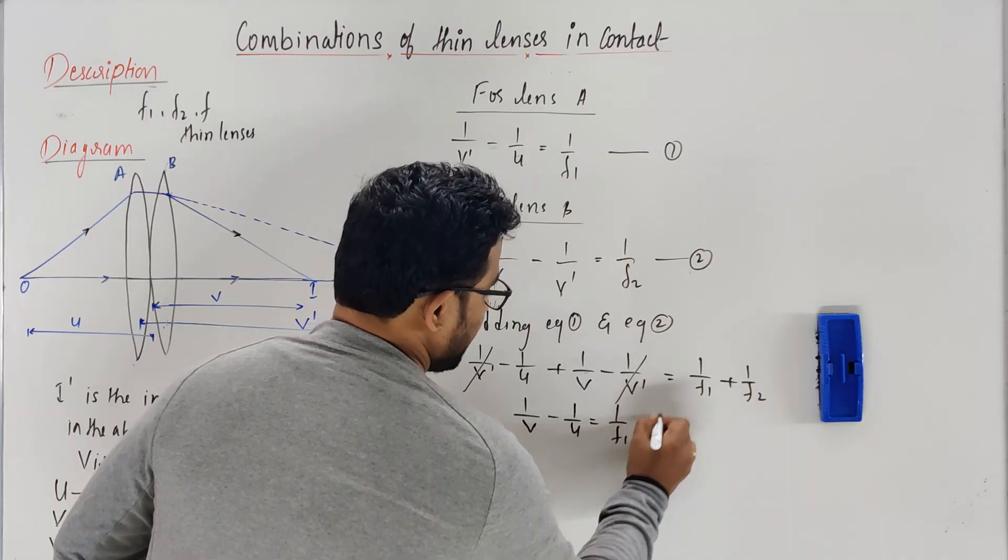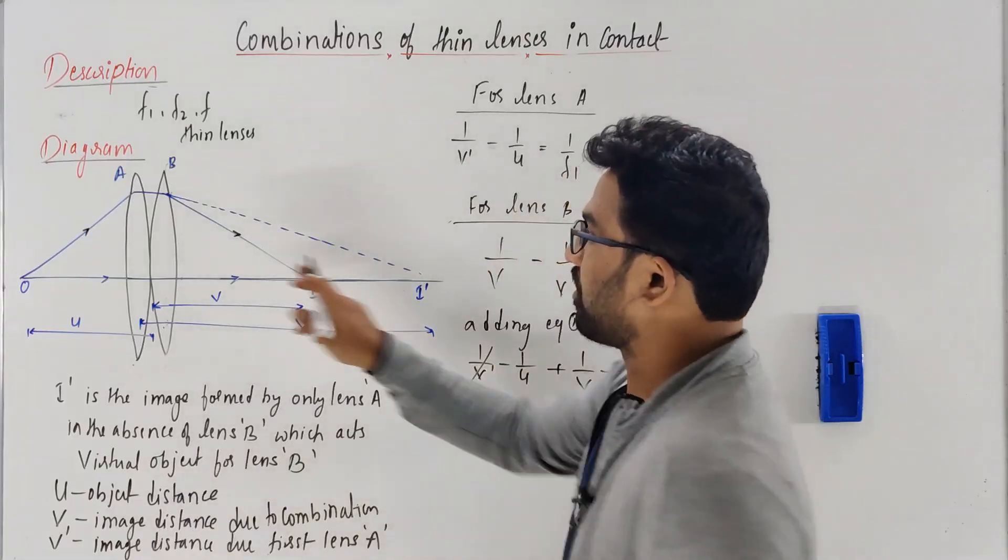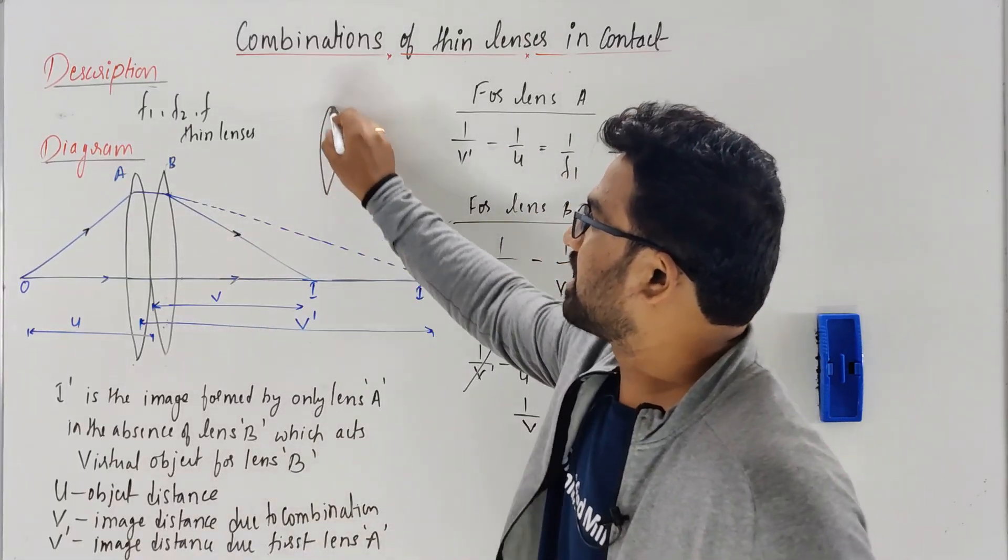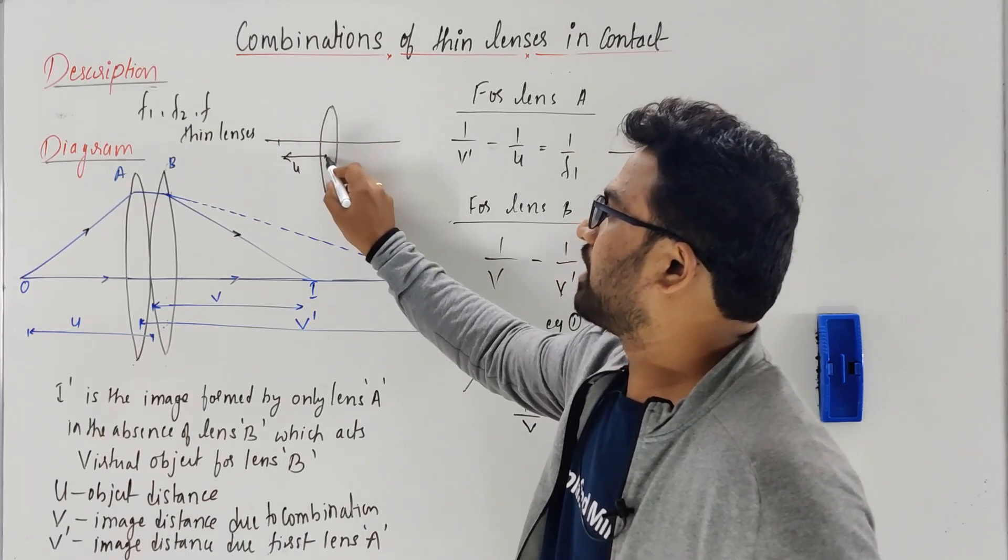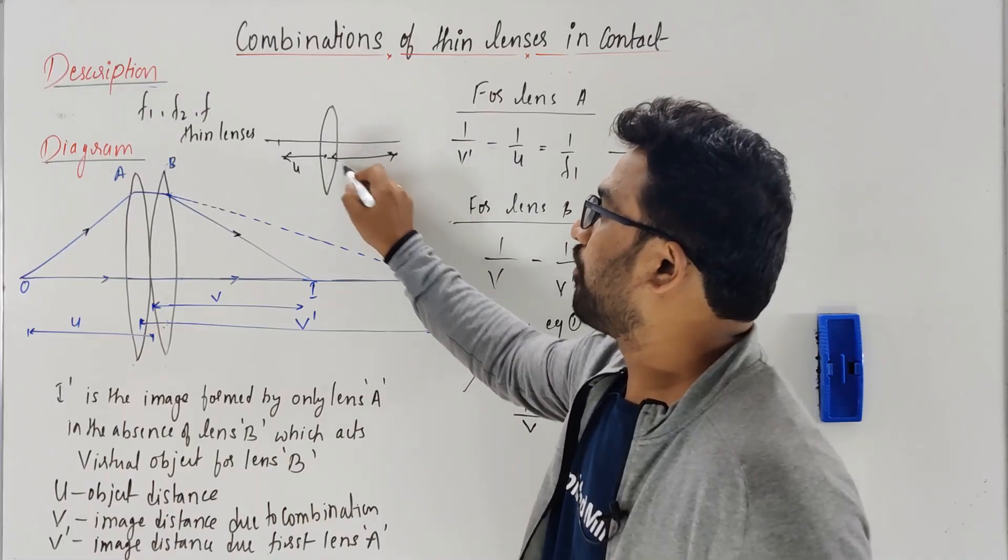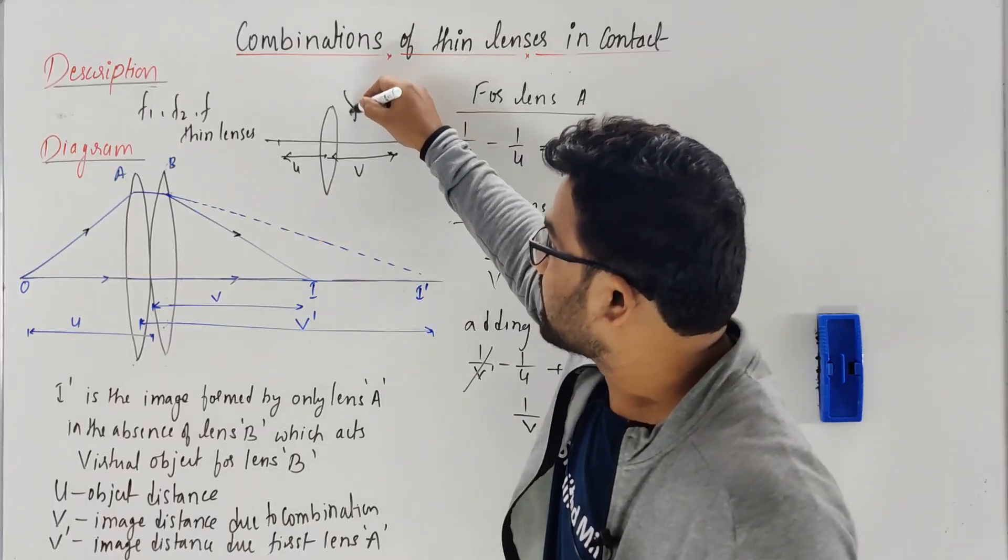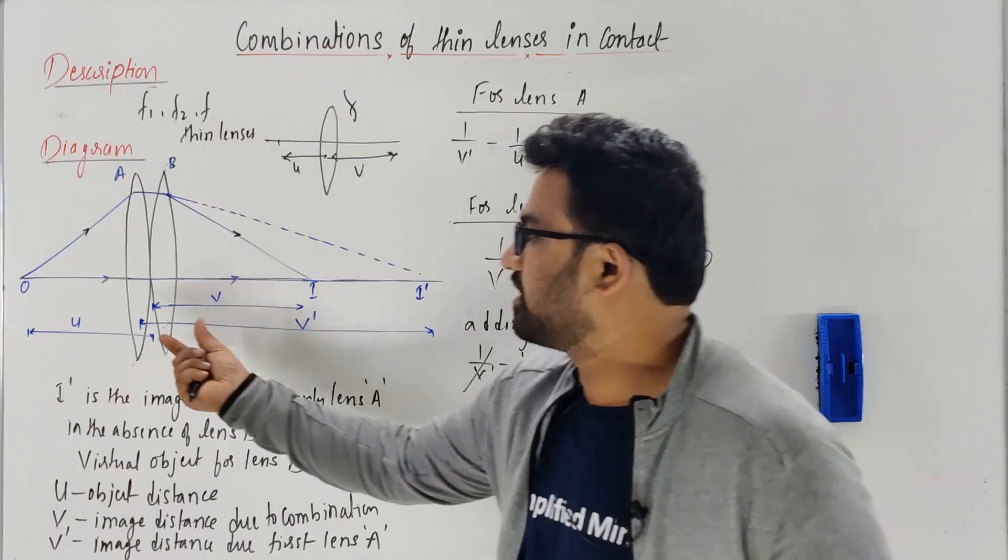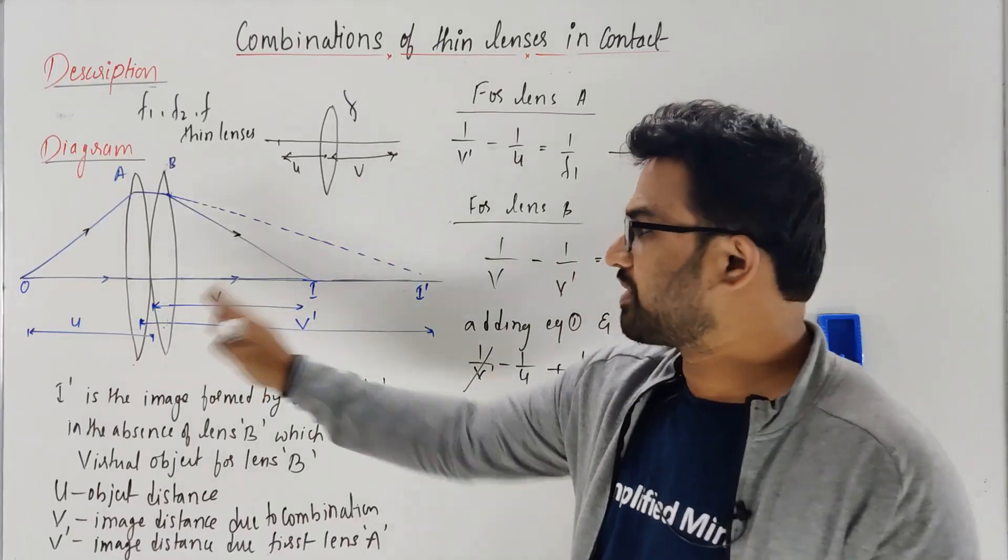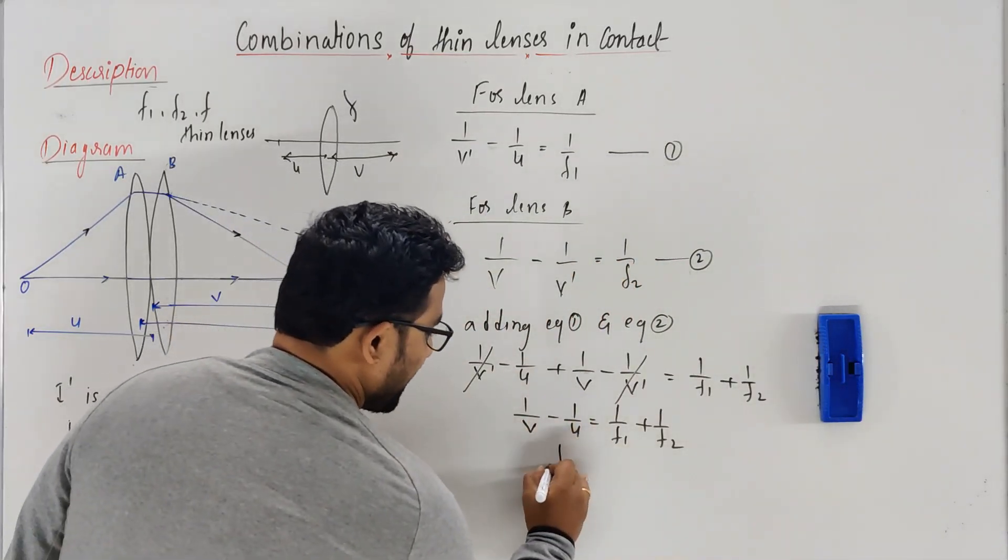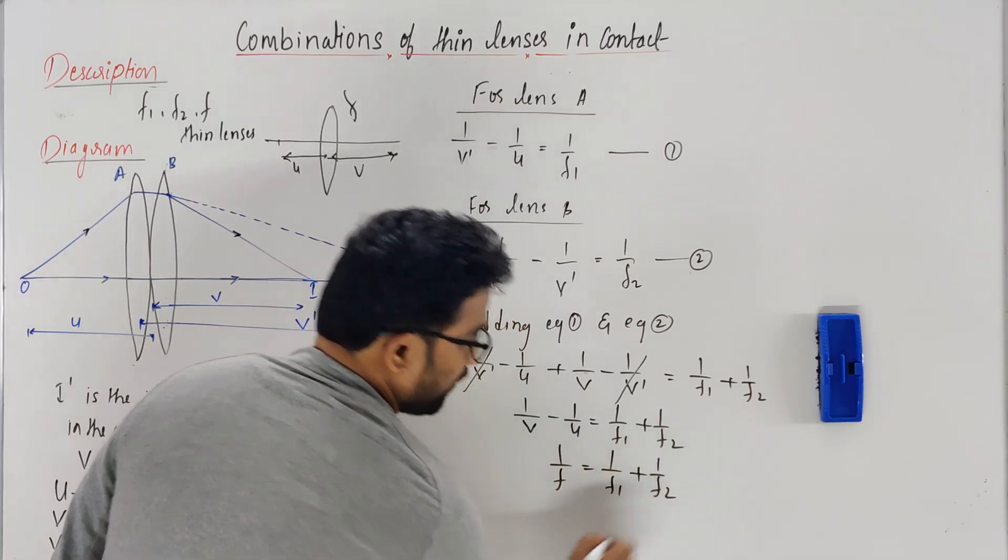Now, suppose if I replace this combination with a single lens, that lens will have object distance u and image distance v for the final image of the combination. Its focal length is f. So 1/v - 1/u equals 1/f. Therefore, 1/f = 1/f1 + 1/f2. That's the final formula.